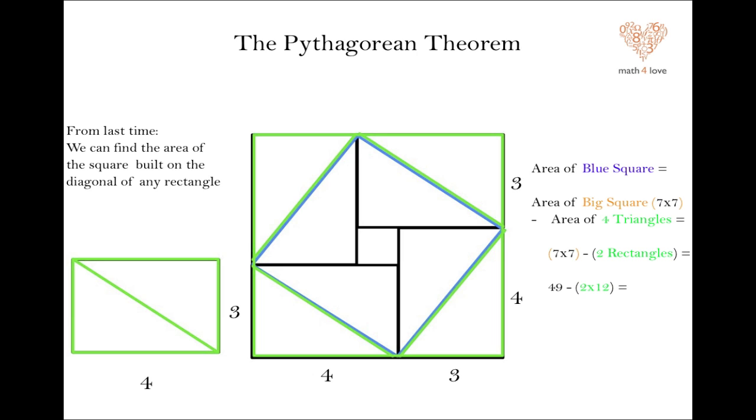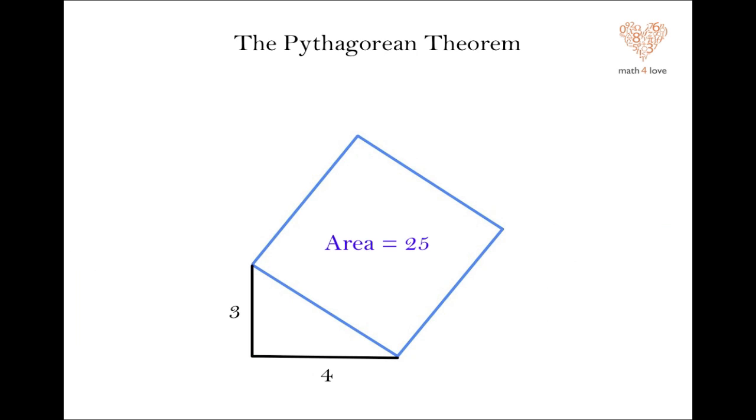Well, seven by seven is forty-nine, and we'll subtract two of the rectangles, which each have area three by four, which is twelve. That leaves us with forty-nine minus twenty-four, which is twenty-five. There we go. The area of that square is twenty-five.